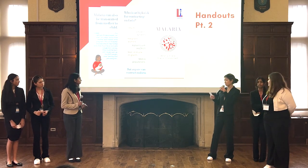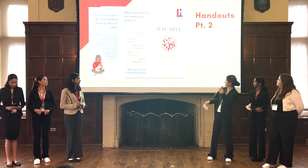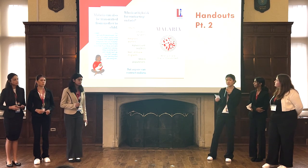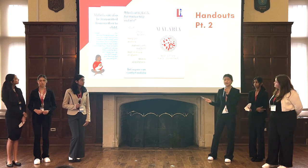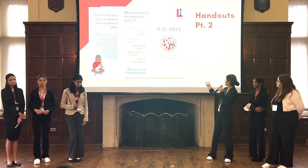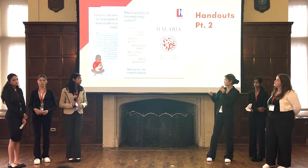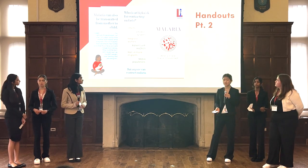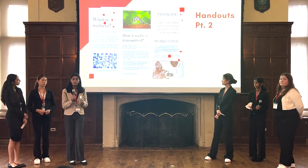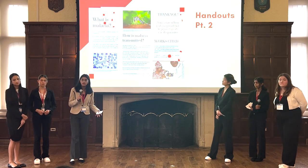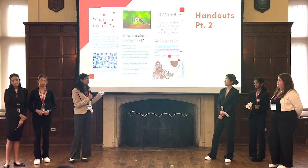Our second handout is a brochure that details the transmission of malaria. It folds like a trifold, and we will be handing it out during the Mosquito Tag game to parents while their children are playing. We will also give it to hospitals for distribution. The first side covers who is at high risk for contracting malaria and describes congenital malaria and how it transmits. The second side explains what malaria is and how it's transmitted, with a general summary and visual aids to help understanding.